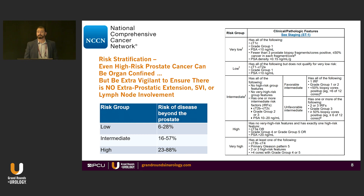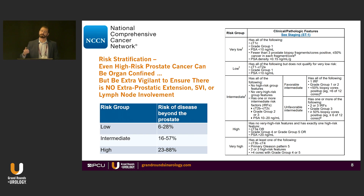We have to realize that organ-confined disease can be in the very high-risk groups. We need to be extra vigilant to make sure it's not beyond the prostate — no extra-capsular extension, no seminal vesicle invasion, no lymph node involvement — which predicts for failure after prostatectomy. For radiation, I need to know where to dose-paint, where to put extra dose safely to eradicate the cancer. Even in low-risk groups there can be cancer past the prostate; in high-risk groups, there's a high probability you'll find something that's not localized.